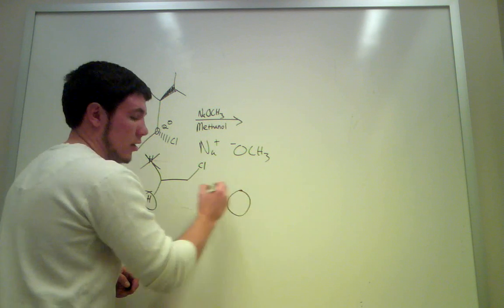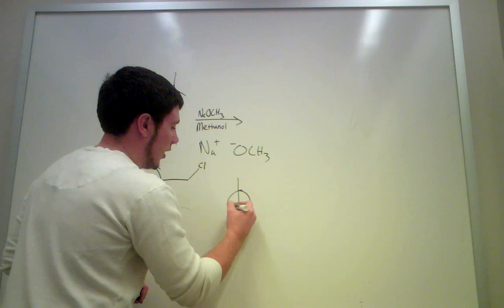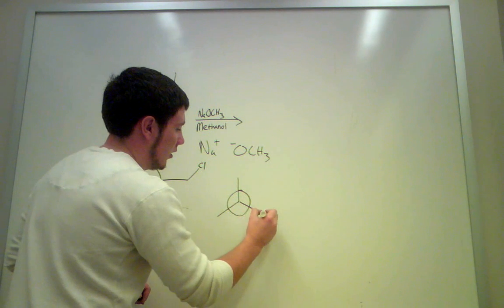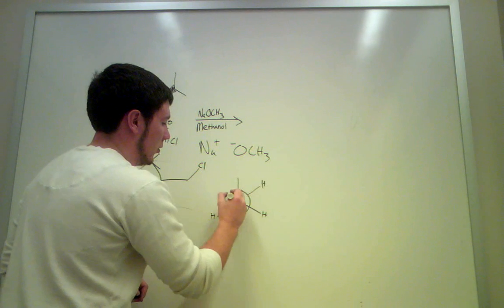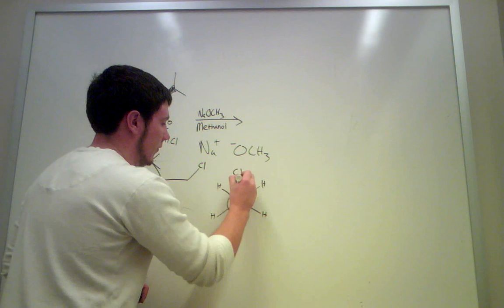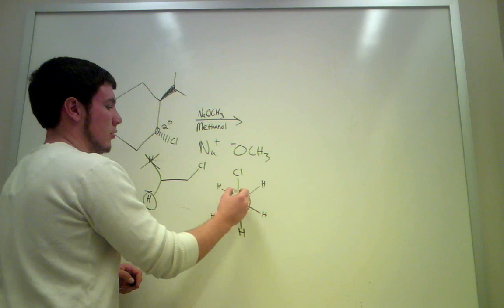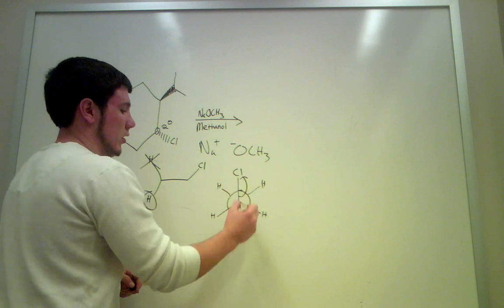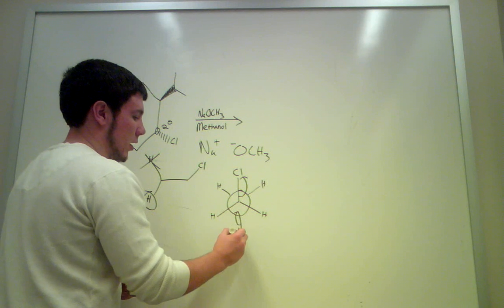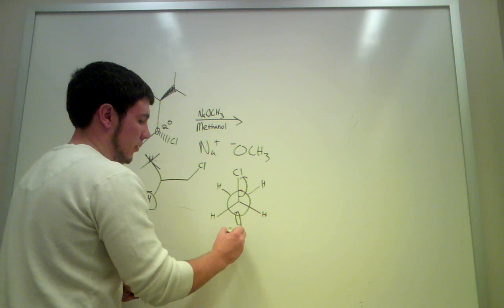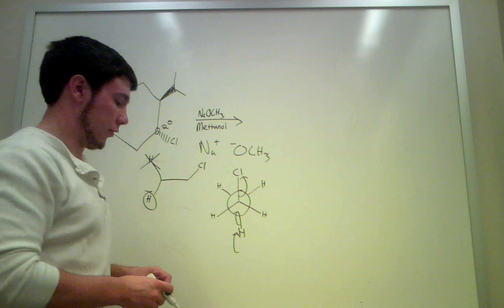Looking at it on a Newman projection, if you've got these H's here, let's say that you've just got a methyl in the background. You've got this H. This right here is going to leave as this one forms the bond and is taken by the base. So that's what you're going to be looking for.